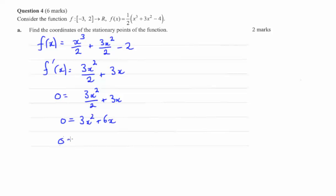Let's factorize that. So we're going to take out 3x. That gives us x plus 2 in the brackets. We'll start working up here. We have 3x in brackets x plus 2. So that means x equals 0 or x equals negative 2.